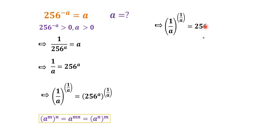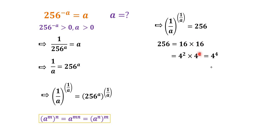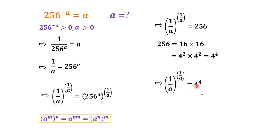We factorize 256. We know 256 equals 16 times 16, and 16 equals 4 squared, so 256 equals 4 to the power of 4. The equation therefore becomes (1/a)^(1/a) = 4^4.